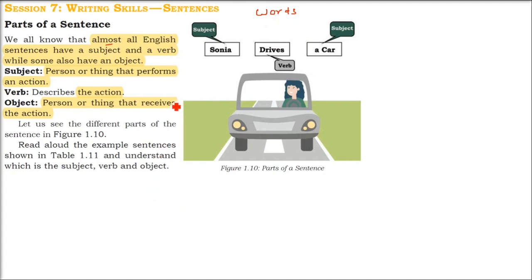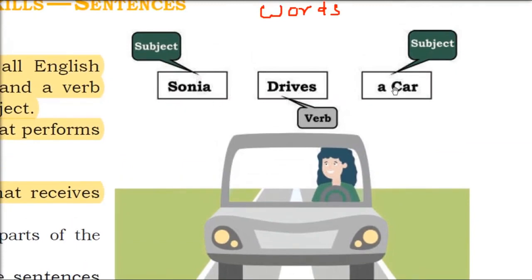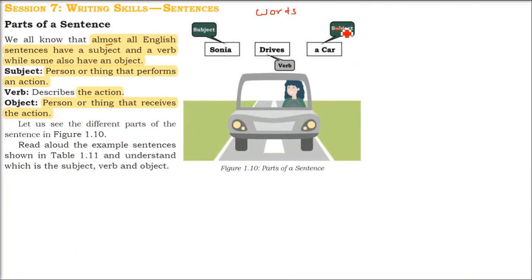In almost every sentence we have a subject, a verb, and an object. Take an example here: Sonia drives a car. Sonia is the subject — the person or thing which does an action. To whom the work is done, or who is taking the work, is the object. Drives is the verb. So almost all sentences have subject, verb, and object.